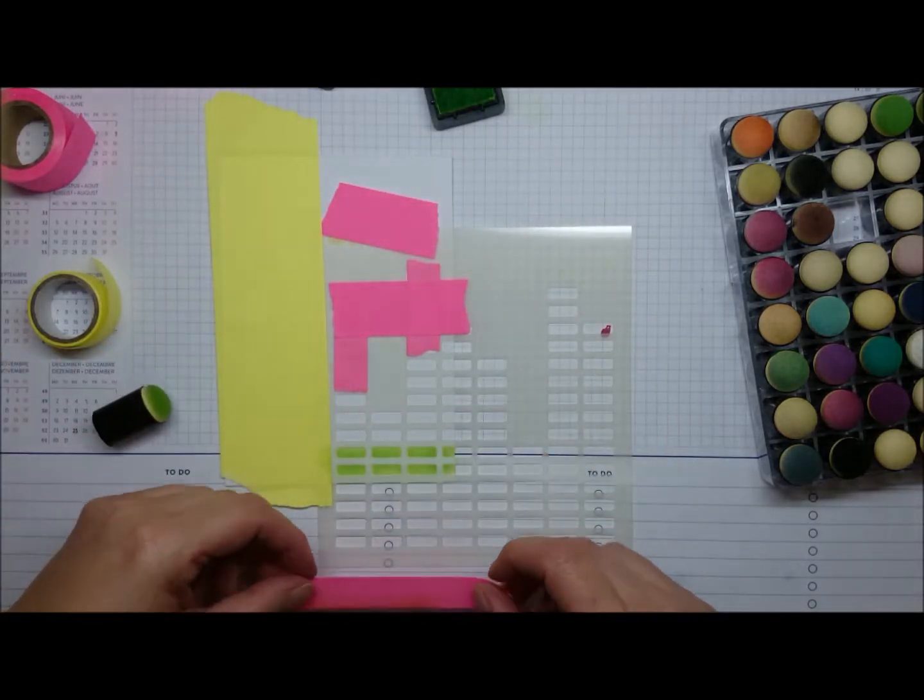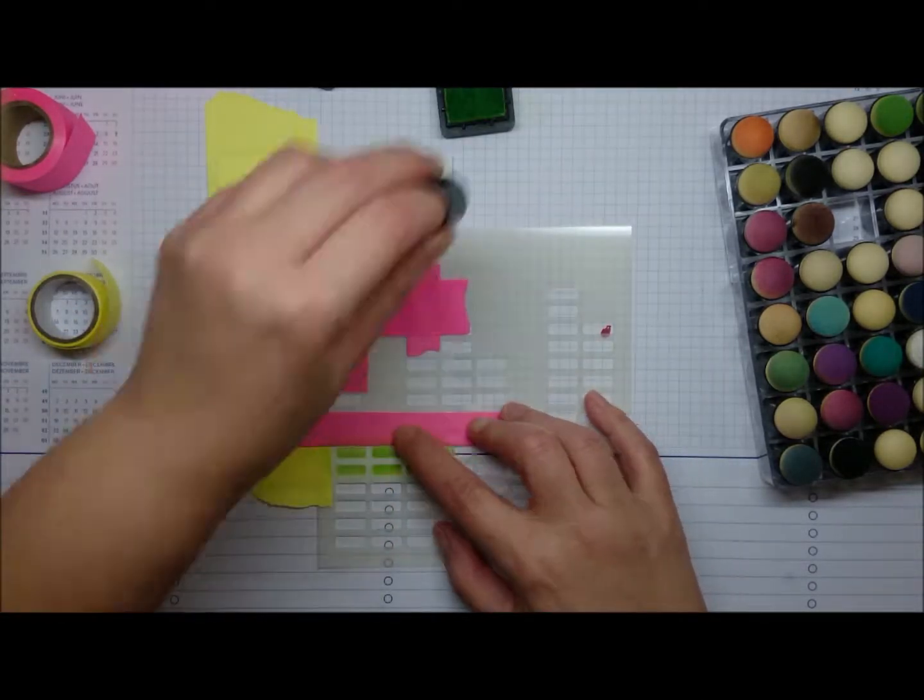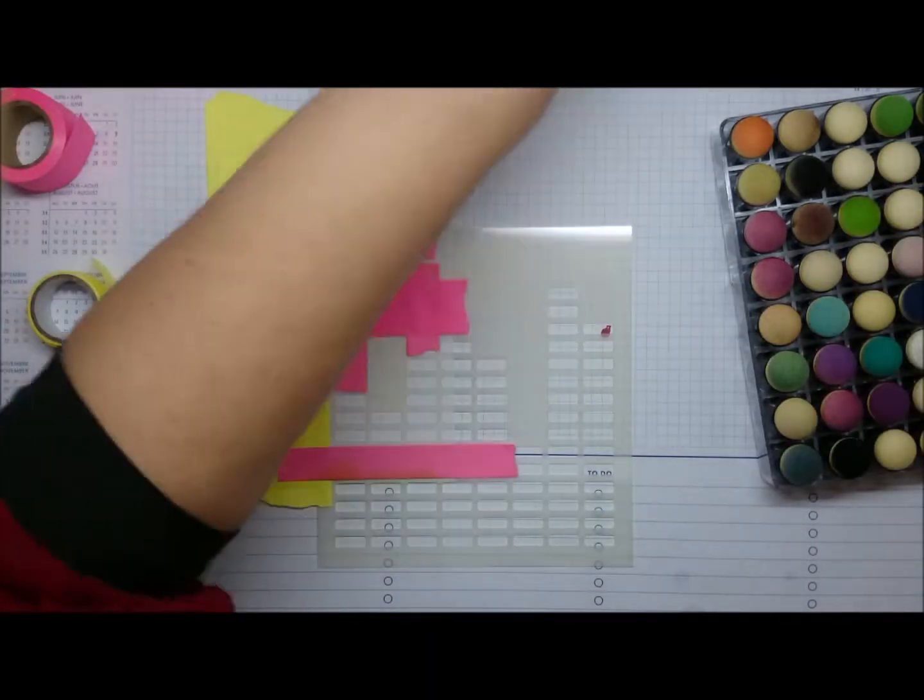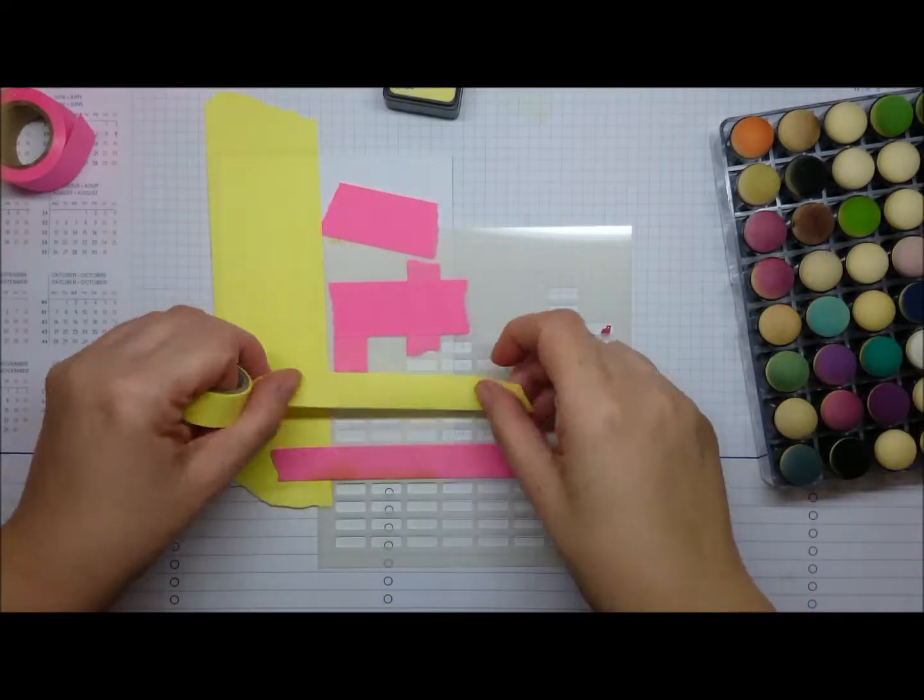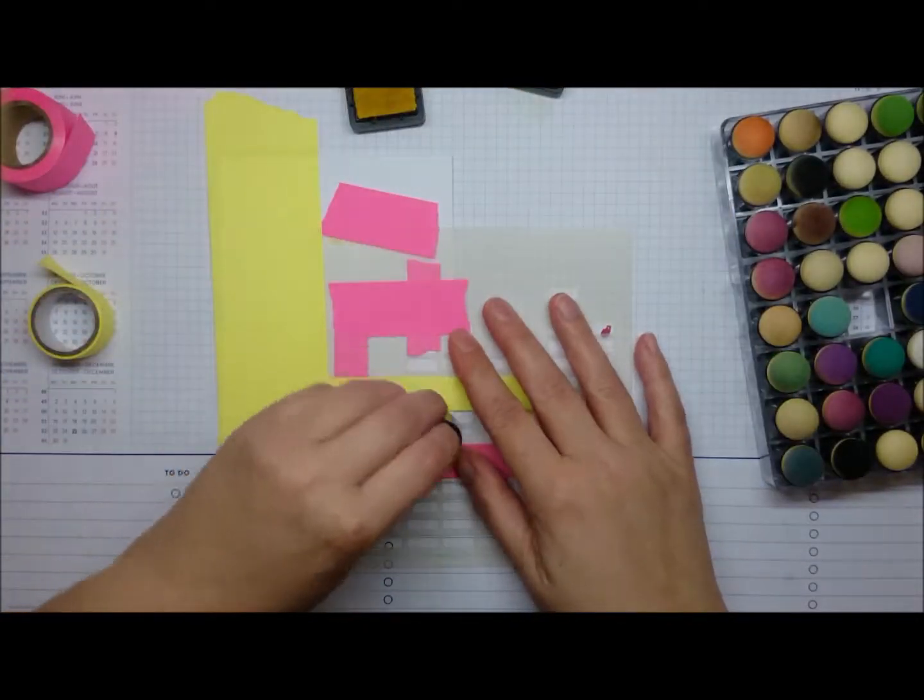I'm just using mini finger daubers to apply. This is twisted citron. Any color that you have of course will do. And then I'm masking off the other bit so I don't get any yellow or red on the previous color. So squeezed lemonade.